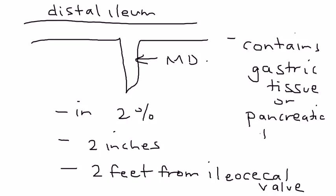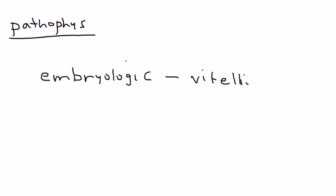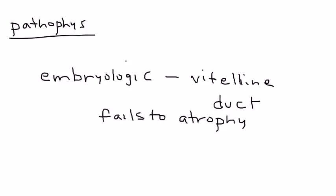That ectopic tissue is the basis for a diagnostic study that will be discussed later. The condition is an embryologic problem: there is a duct called the vitelline duct that normally atrophies, but if this duct fails to atrophy during the embryologic stage, you get Mechal diverticulum — essentially an error in embryology.